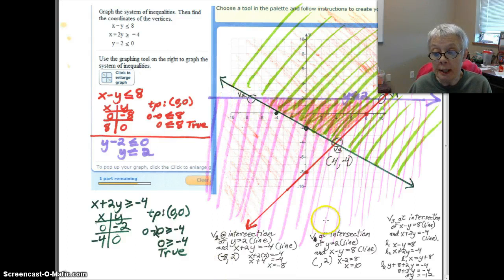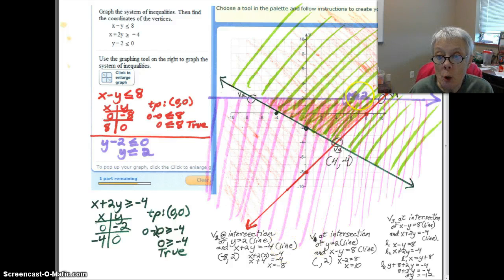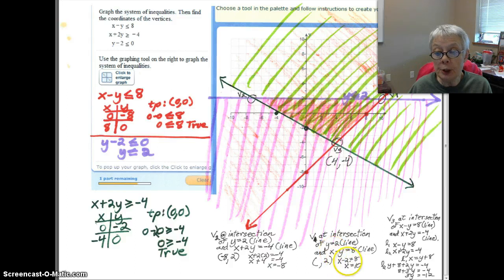Now going over to V1, that occurs at the intersection of the line Y equals 2 and the line X minus Y equals 8. So I solve those two lines together. Y is already 2, so all I have to do is substitute 2 for the Y and I find out that X is 10. And this is the point 10, 2.